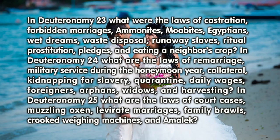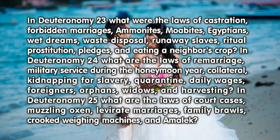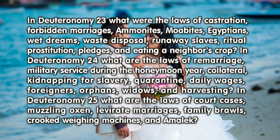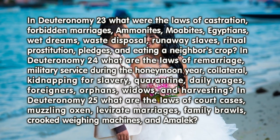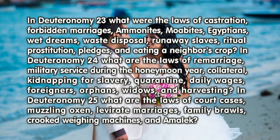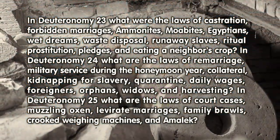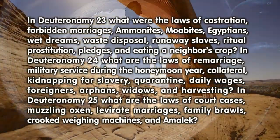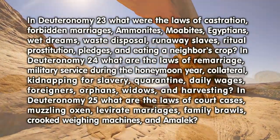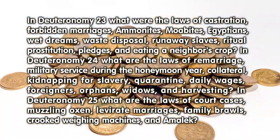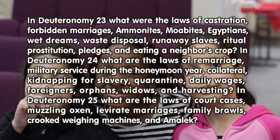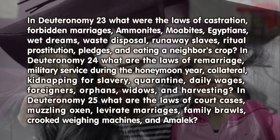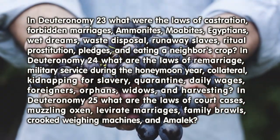In Deuteronomy 24, what are the laws of remarriage, military service during the honeymoon year, collateral, kidnapping for slavery, quarantine, daily wages, foreigners, orphans, widows, and harvesting?